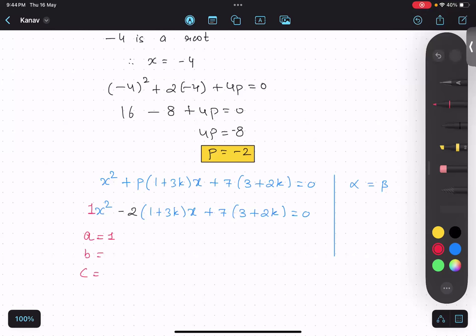B is minus 2 bracket 1 plus 3k. Very good. And what is C? 7 bracket 3 plus 2k. Very good.